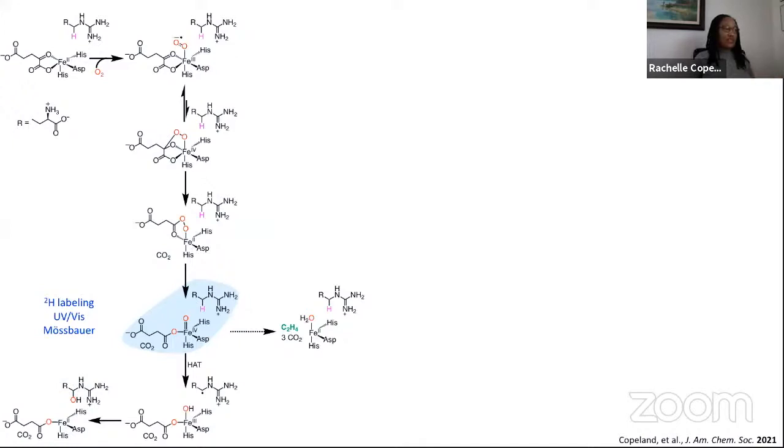The way we typically probe activity or reactivity around the iron-4-oxo is by introducing deuterium at what we believe to be the site on the molecule that is targeted for hydrogen atom abstraction, and then use UV-Vis and Mössbauer spectroscopy to observe changes in the ferryl. A reasonable hypothesis from which to launch investigation into the mechanism of ethylene formation is what if this ferryl, instead of targeting arginine for oxidation, is instead able to target the succinate that's bound to it?